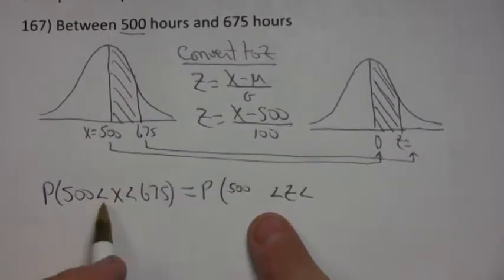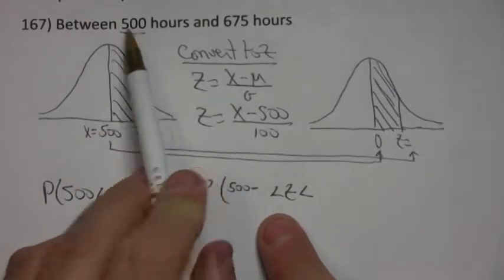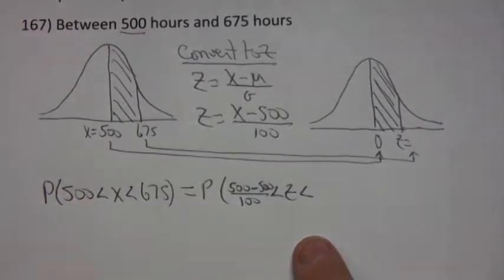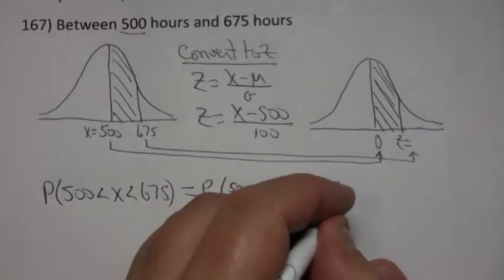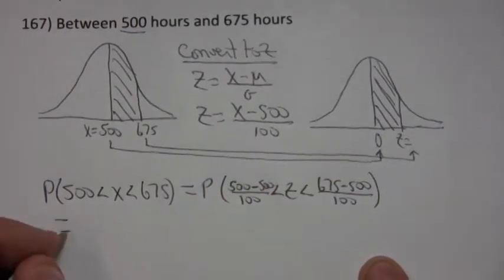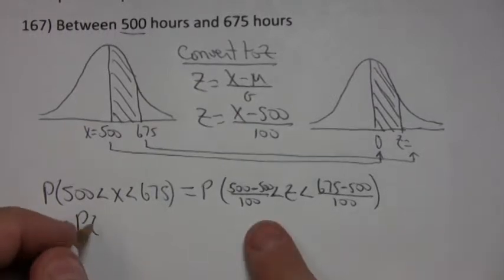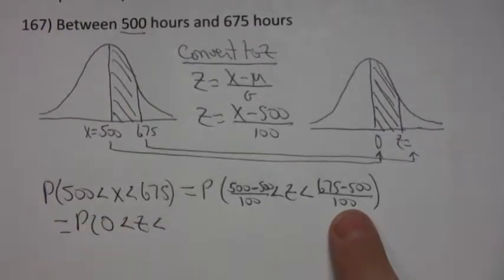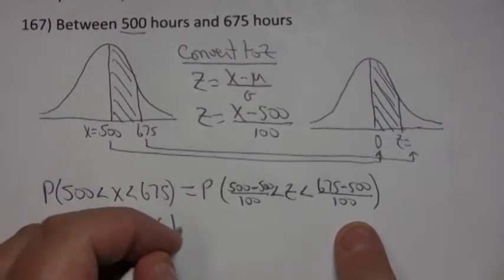So if I take the first value, subtract the mean which happens to be 500, and divide by the standard deviation which is 100, then I do the same thing over here. I take 675, subtract the mean which is 500, divide by the standard deviation. I end up with the probability 500 minus 500 is 0, so 0 divided by 100 is 0. And then 675 minus 500 is 175, and 175 divided by 100 is 1.75.